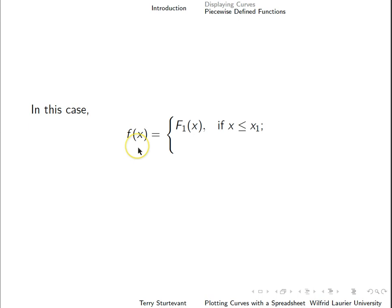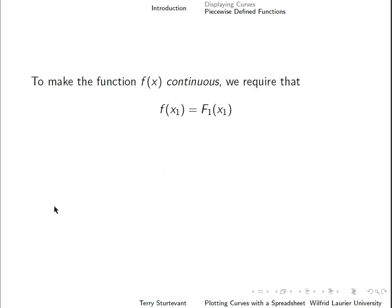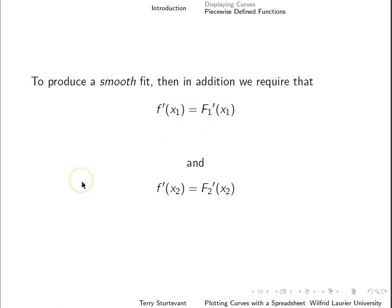So the equation for that curve is the y value at the left end has to be the same as the y value of the first function. The y value at the second end has to be the y value of the second function. And then, to make it smooth, we also need that the derivatives of those two things are the same.